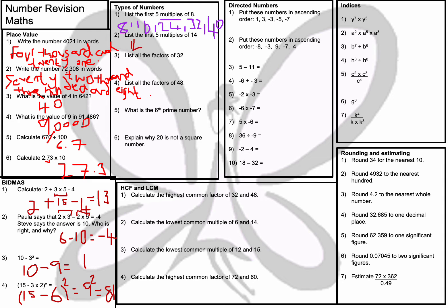Question number 2: list the first 5 multiples of 14. Adding 14 each time: 14, 28, 42, 56, and 70. If you're unsure, just keep adding 14 each time. The word multiple just means times tables.